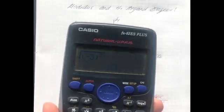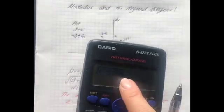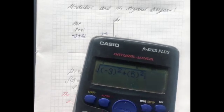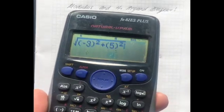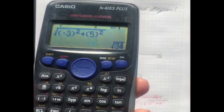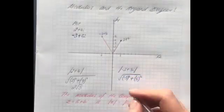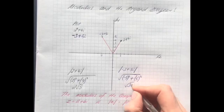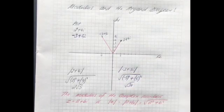And then on the calculator we can do that calculation. Don't forget to keep your brackets around what you've subbed in, plus in the middle. And there we go, we have minus 3 squared plus 5 squared equals square root of 34.